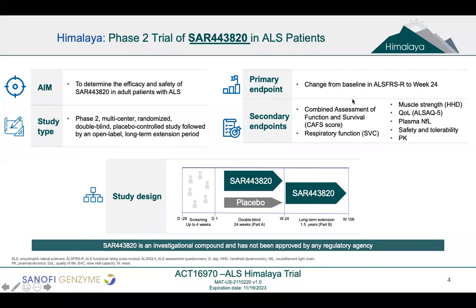The primary endpoint is the change from baseline in the ALS Functional Rating Scale at 24 weeks. The secondary endpoints include ALSFRS, respiratory measures, slow vital capacity, and plasma neurofilament, in addition to safety, tolerability, and PK.